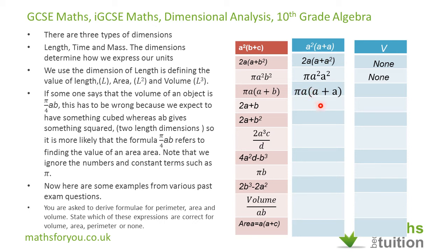For the next one, we have pi times A times (A plus A plus A). That gives pi times A times 2A, which is 2πA squared. So this formula is valid for area. Then for the following expression, 2A plus A gives 3A, so that formula is valid for length — in other words, perimeter.